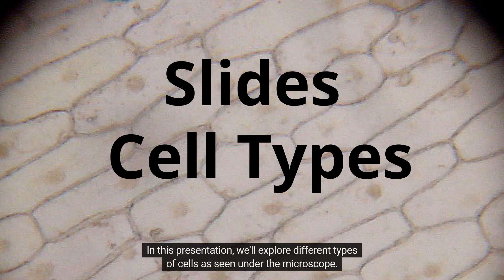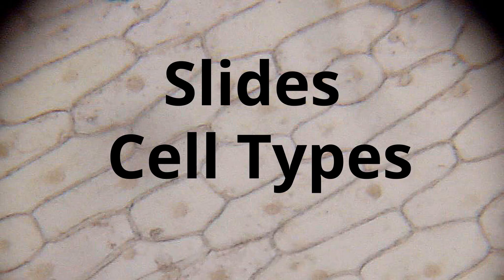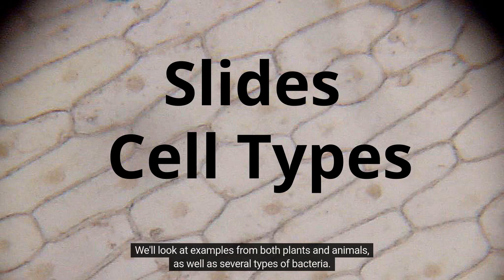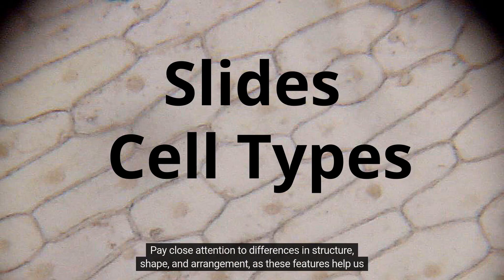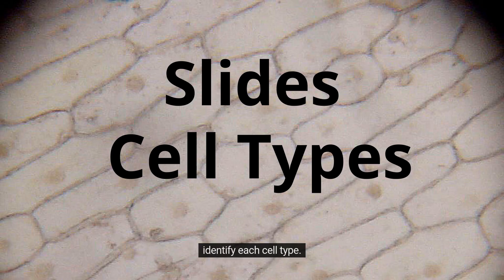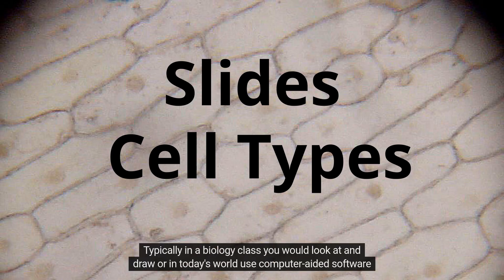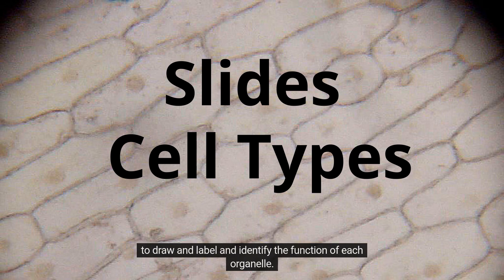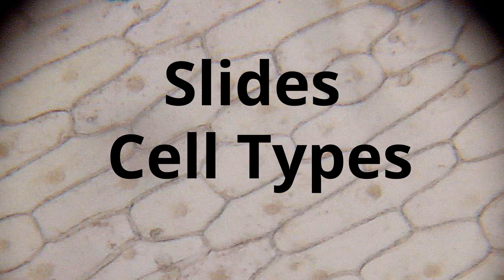In this presentation, we'll explore different types of cells as seen under the microscope. We'll look at examples from both plants and animals as well as several types of bacteria. Pay close attention to differences in structure, shape, and arrangement, as these features help us identify each cell type. Typically in a biology class you would look at and draw — or in today's world use computer-aided software to draw — and label and identify the function of each organelle.